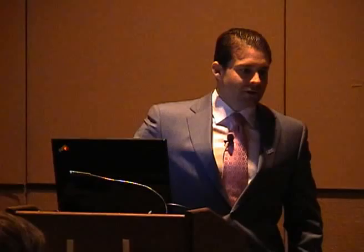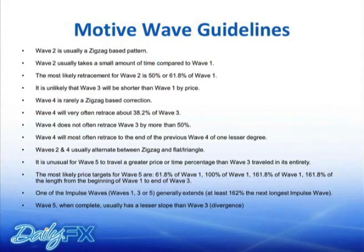There are also guidelines — rules cannot be broken, but guidelines are tendencies. Wave two is usually sharp; in other words, it's usually a zigzag. That makes sense because think about the psychology of where wave two is — it's after a major low. Think of the psychology that attends to a wave two correction. You have this rally or decline from a significant high or low that is the beginning of a new trend.